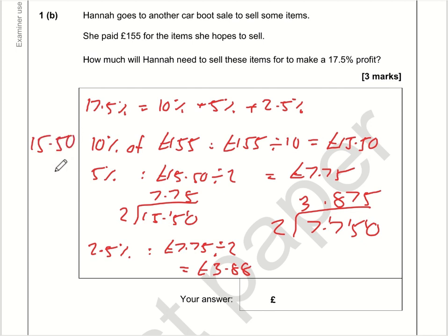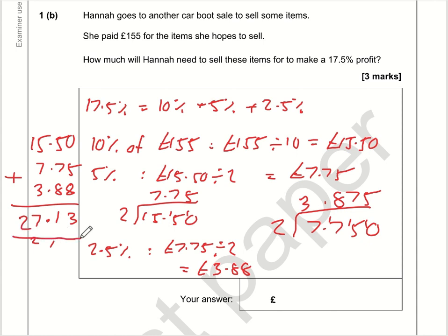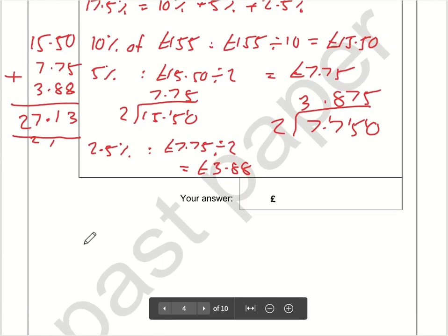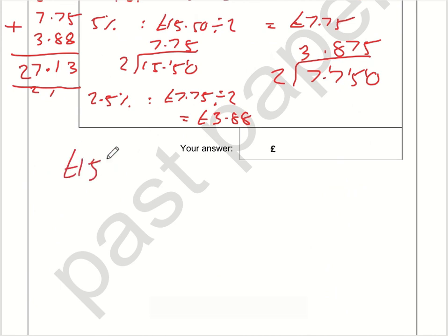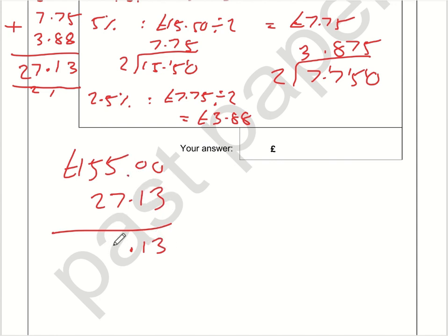So 17.5% is going to be £15.50 plus £7.75 plus £3.88. Five plus eight is 13, carry one; seven plus eight is 15, plus carried digits gives 21, carry two; 10, 15, 16, 17, carry one — so £27.13. That is a profit of £27.13, so she needs to sell the item for £155 plus £27.13. That gives 13p, plus 5 plus 7 is 12, carry one; 5 plus 2 is 7 plus 1 is 8; 1 plus nothing is 1 — so the selling price is £182.13.